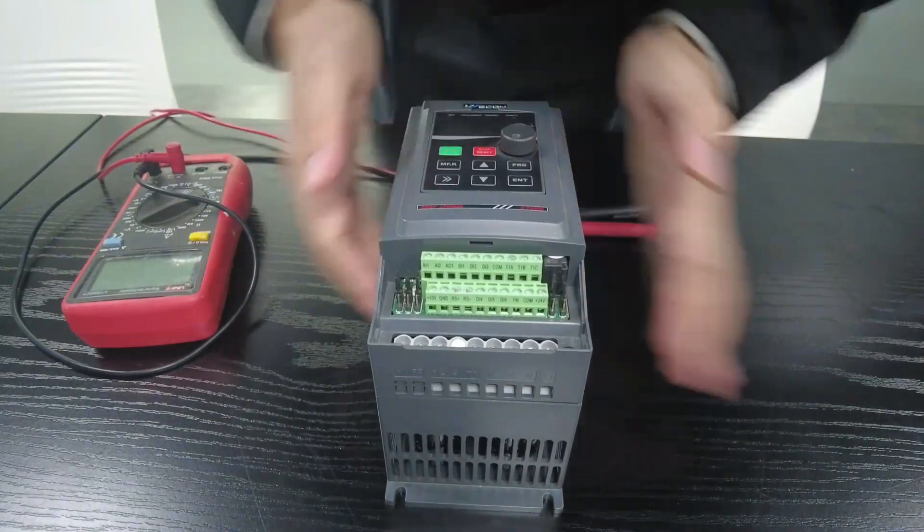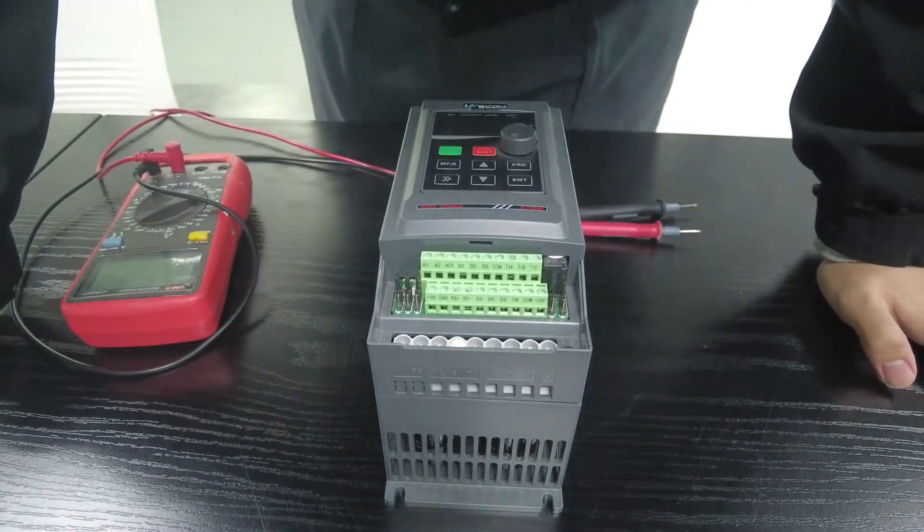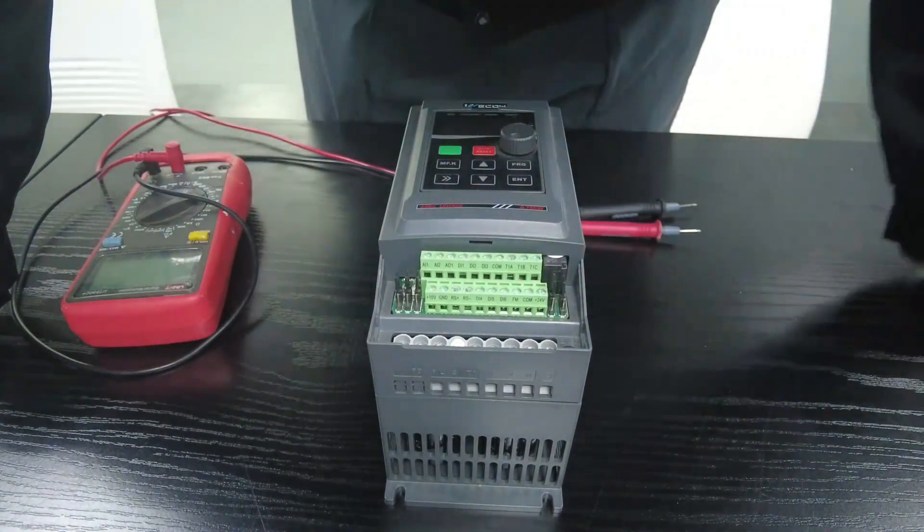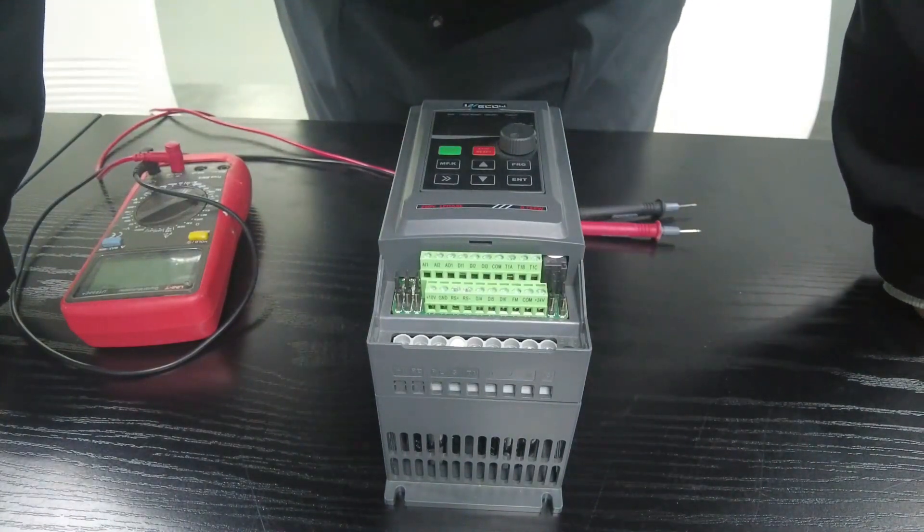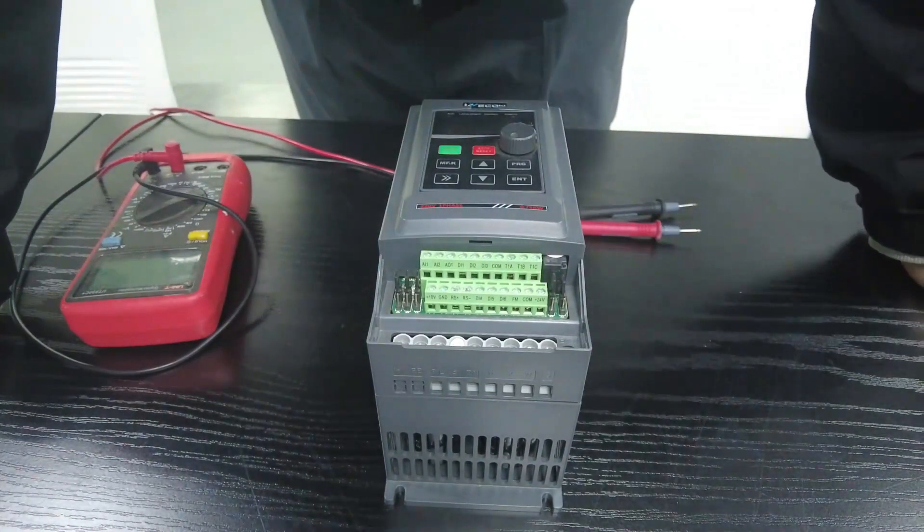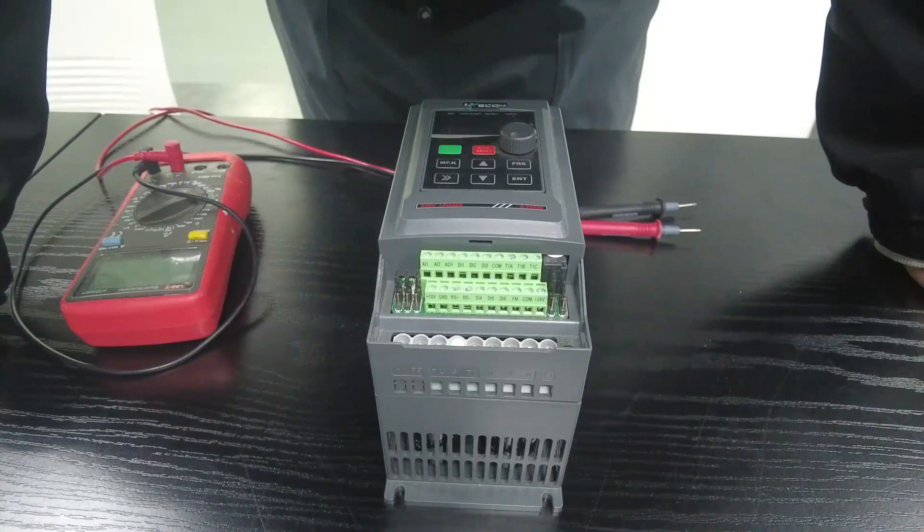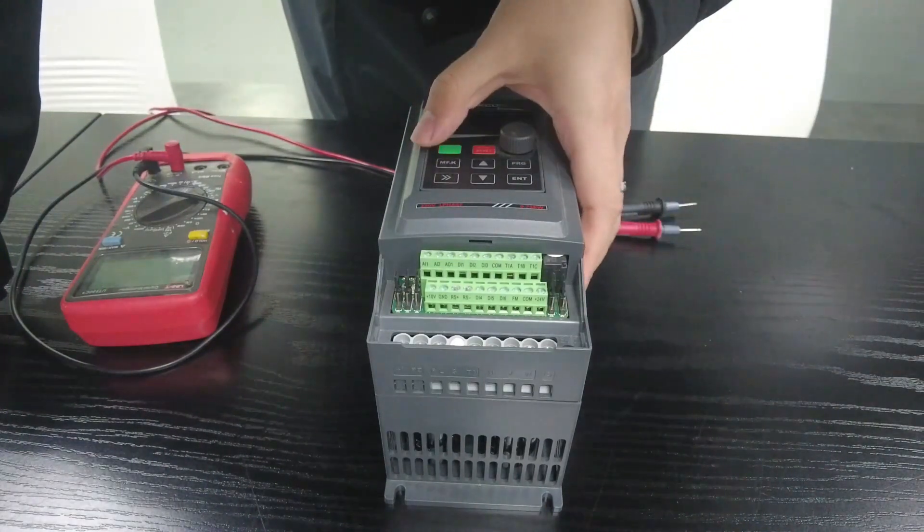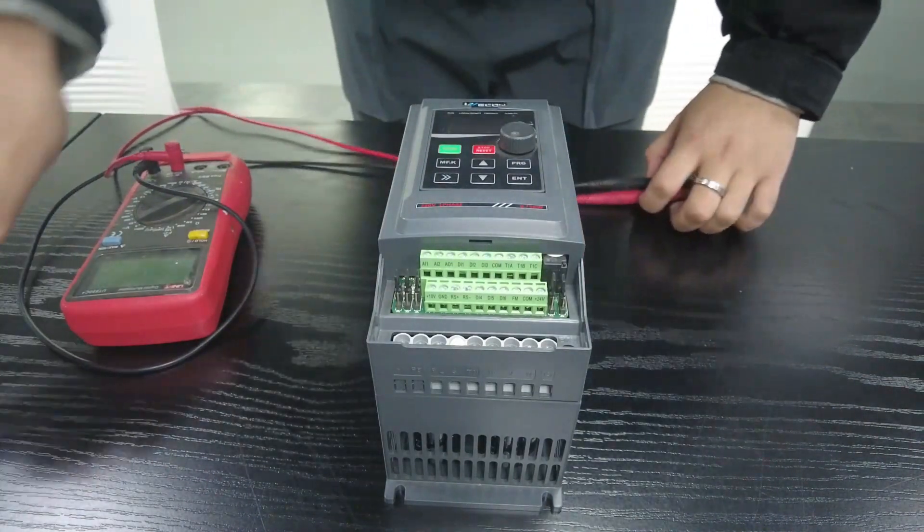Since the inverter I have is 7.5 kW and the positive and negative DC bus terminals of small type are not displayed outside, the first thing we need to do is to take apart the shell. If the inverter is of large size, this step is not necessary.